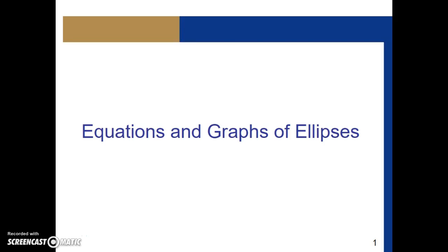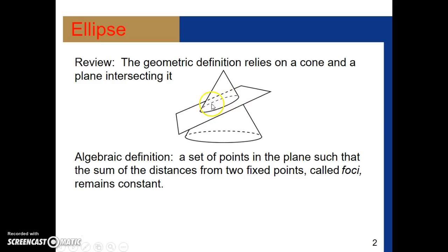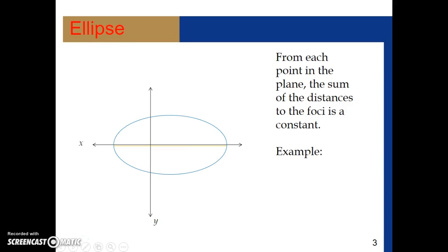Now we're going to talk about equations and graphs of ellipses, the third conic section that we'll be discussing in our conic section work. Ellipses are those oblong shaped conic sections and they come from angling the plane and intersecting the cone, giving you this oval shape. The geometric definition relies on a cone and a plane intersecting, and the algebraic definition is a set of points in the plane such that the sum of the distances from two fixed points called foci remains constant.